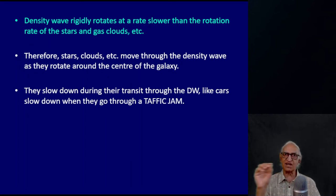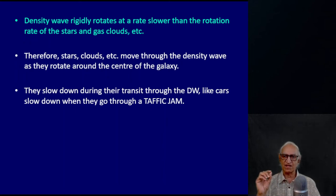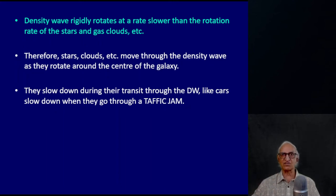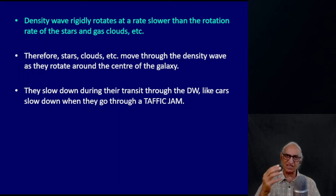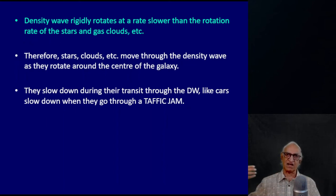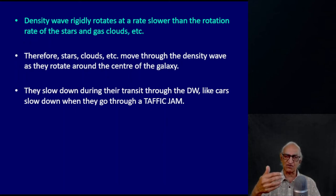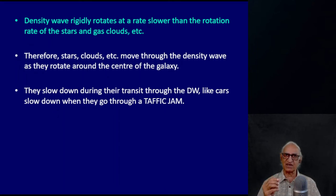When these gas clouds and stars pass through the density wave, they will slow down temporarily, and after they have passed the maxima of the density wave, they will speed up once again. This is exactly what happens to a car as it enters a traffic jam — a car comes fast, slows down at the jam, passes through, and speeds up again. Our spiral density wave is just like a traffic jam, but a special type: the traffic jam itself is moving rather slowly.